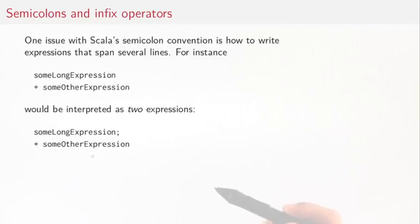Being able to omit semicolons at the end of lines is very convenient, but there's one issue with it. How would you write an expression that spans several lines? To see the problem, consider this expression here, some long expression, then it's continued on the second line with plus some other expression. That would actually be interpreted by the Scala compiler as two expressions. The first expression is this some long expression, then it would be the implied semicolon, and then comes plus with the other expression.